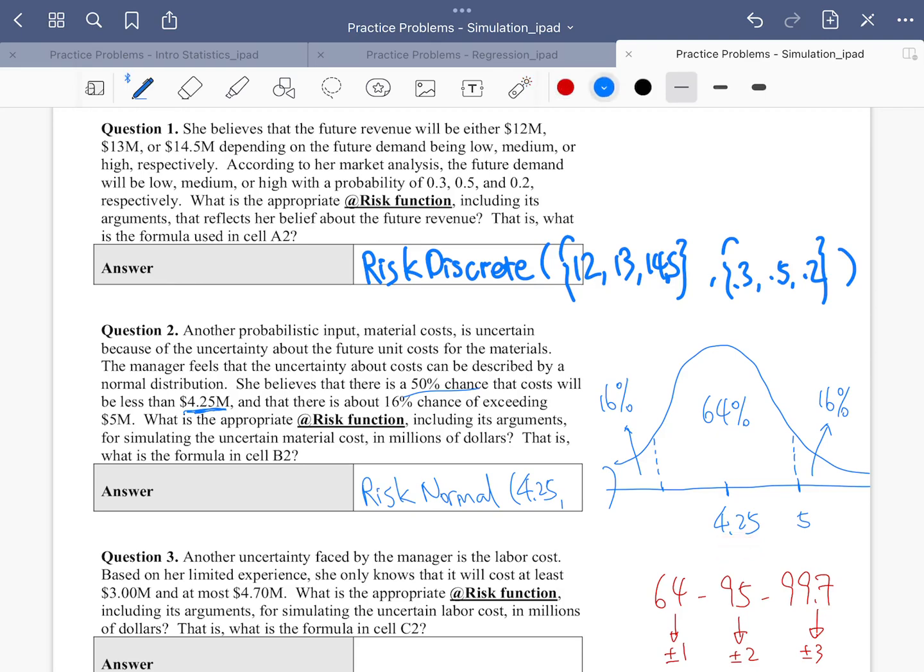That means five is one standard deviation above 4.25. And their difference is 0.75. So that means one standard deviation is actually nothing but 0.75. I got 0.75 from 5 minus 4.25. Hooray! We know the standard deviation is 0.75.